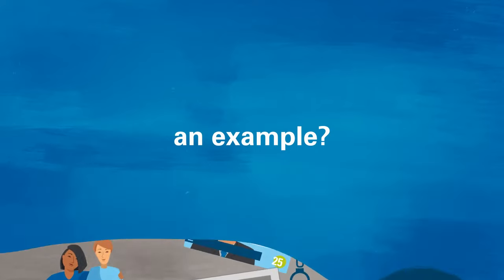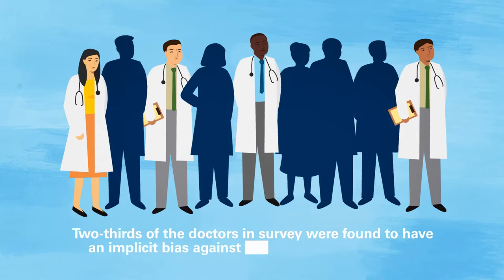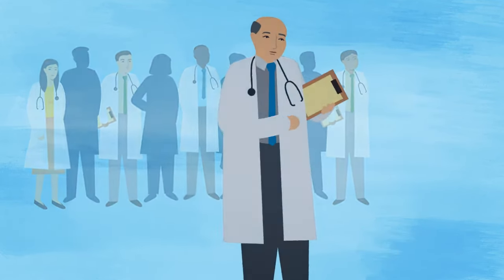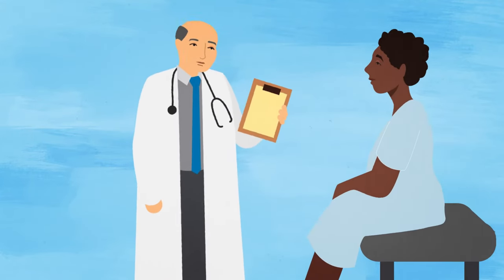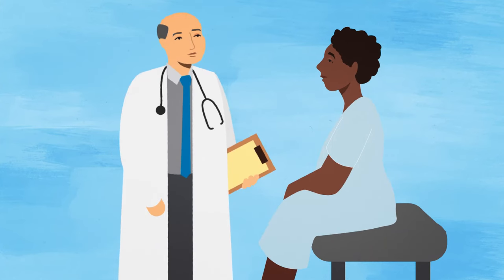An example? In one study, a group of doctors said they didn't have a bias toward people of color, but two-thirds were found to have an implicit bias against Black people and Latinos. This bias showed up in how the doctor communicated with the patient and whether the doctor showed concern for the patient, and this bias affected the care these patients received.